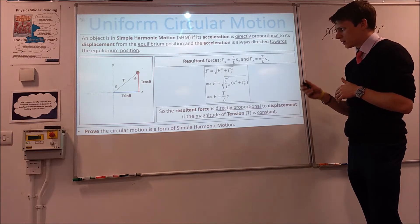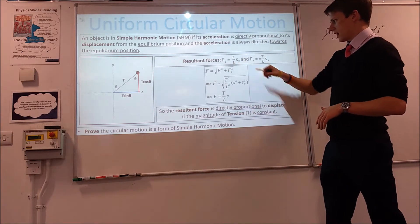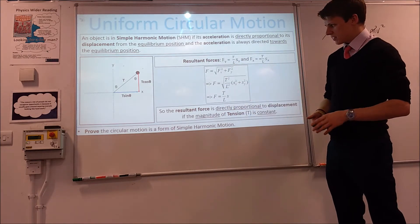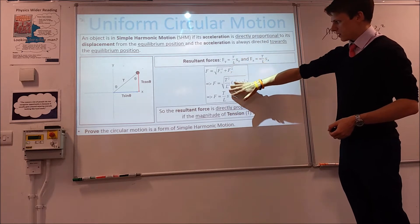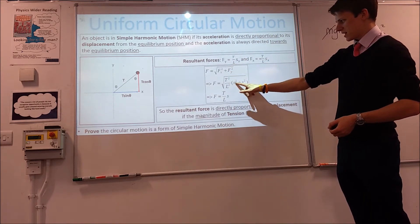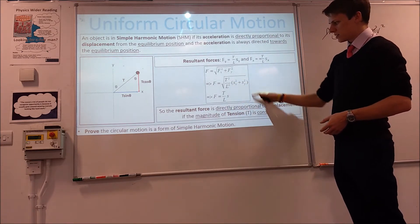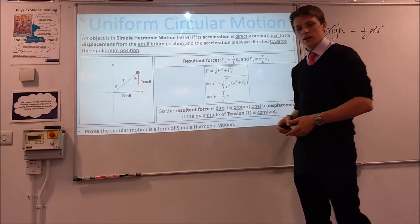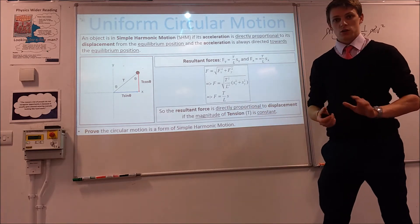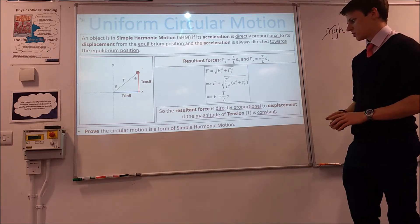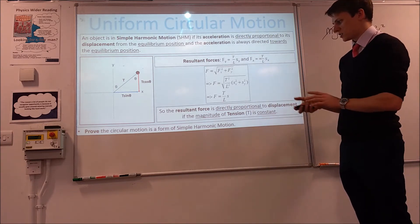Now we've got that, we can work out what the resultant force is if we know Fy and Fx. We square them and add them together: Fx squared plus Fy squared gives us T squared over L squared times Sx squared plus Sy squared, which is just S squared. So the whole thing becomes T over L times S. The resultant force is directly proportional to the displacement, as long as the magnitudes of T and L don't change. That's one of our conditions of circular motion.